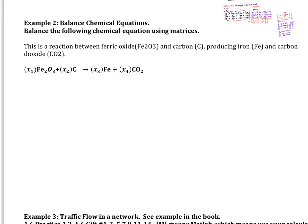Example number two: we want to balance chemical equations using matrices. This is a reaction between ferric oxide and carbon producing iron and carbon dioxide. The molecules have to match up — what comes in matches what comes out, just in different form. We have to balance the atoms so the quantity on the left-hand side equals the right-hand side.